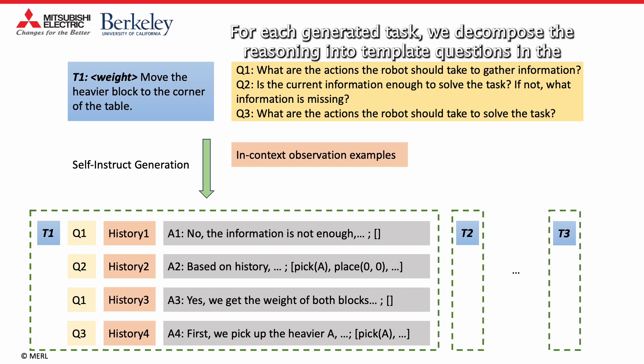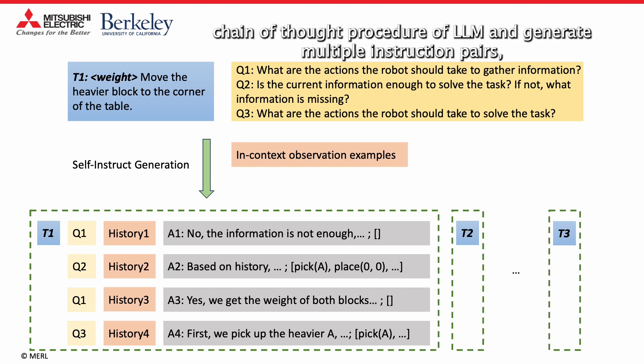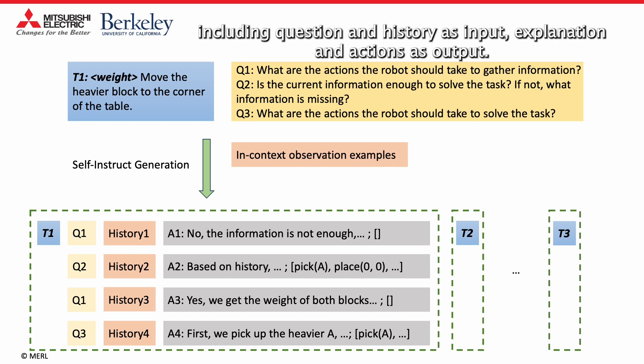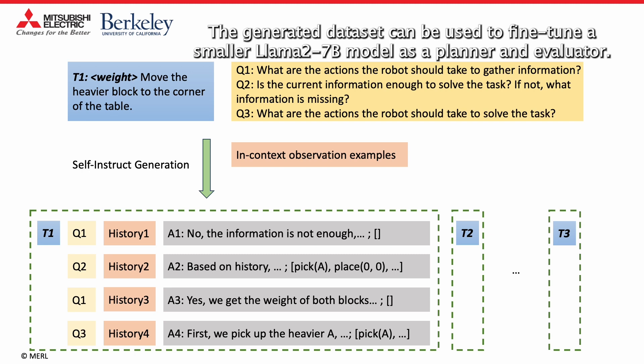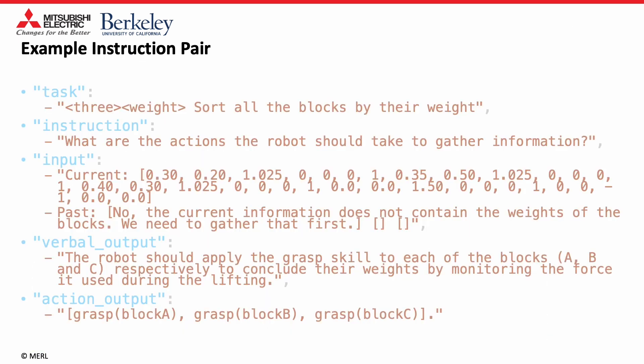For each generated task, we decompose the reasoning into template questions in the chain-of-thought procedure of LLM, and generate multiple instruction pairs including question and history as input, explanation and actions as output. The generated dataset can be used to fine-tune the smaller LLM-2-7b model as planner and evaluator. Here are two examples of the generated instruction pairs at different rounds for different tasks and uncertainties.